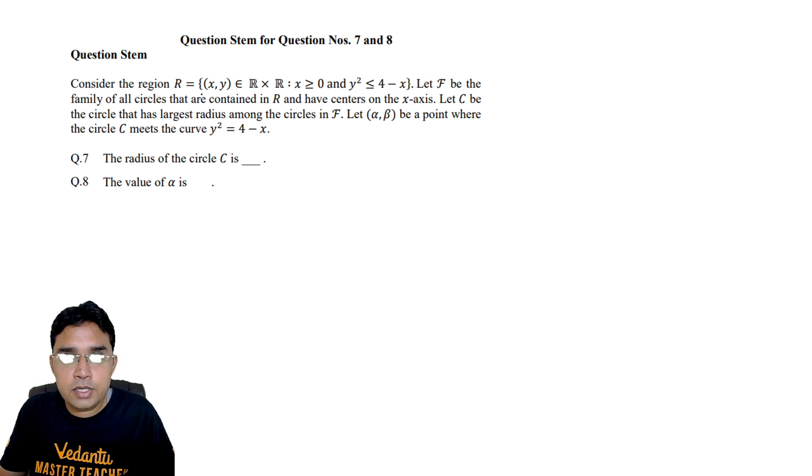Now the question is: consider region r equal to (x,y) belongs to R cross R, x greater than or equal to 0 and y square less than or equal to 4 minus x. Let f be the family of all circles that are contained in r and have centers on x axis. Let c be the circle that has largest radius among the circles in f. Let (alpha, beta) be the point where circle c meets the curve y square is equal to 4 minus x.